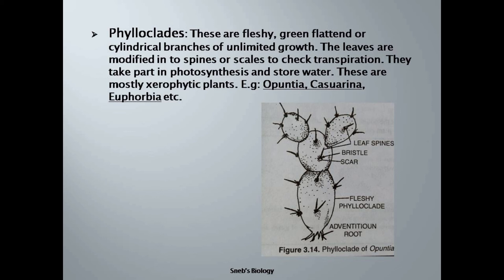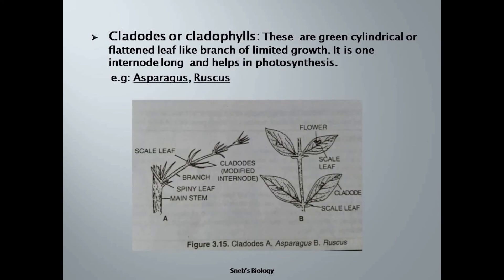The spines are modified leaves, and we know leaves arise from nodes. So every point where these spines arise is actually a node. We can therefore say that the phylloclade is a thick fleshy stem with many nodes and internodes, and we also see some part attached to the parent plant.